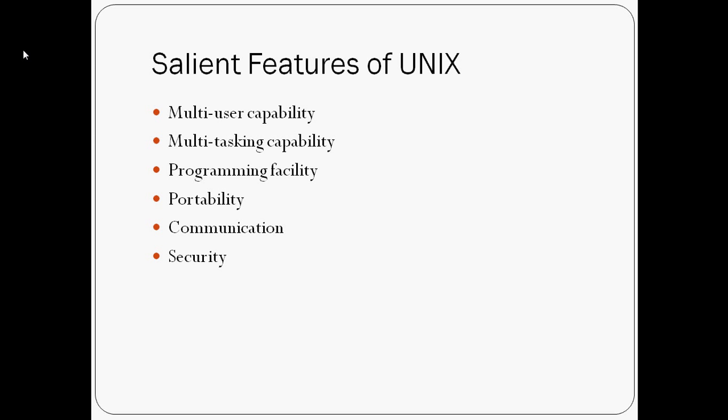One more feature of UNIX was security. UNIX provides three levels of security to protect data. First, it provides username and password for login to ensure nobody can access your work. At the file level, there are read, write, and execute permissions which decide who can access a particular file, who can modify it, and who can execute it. Lastly, there is file encryption — this utility encodes your file into an unreadable format so that even if someone succeeds in opening it, your data remains safe because it is encrypted.